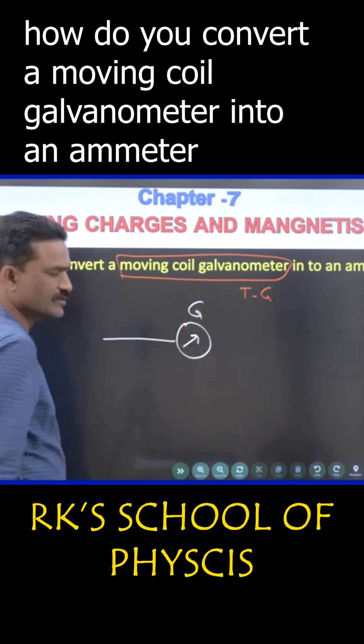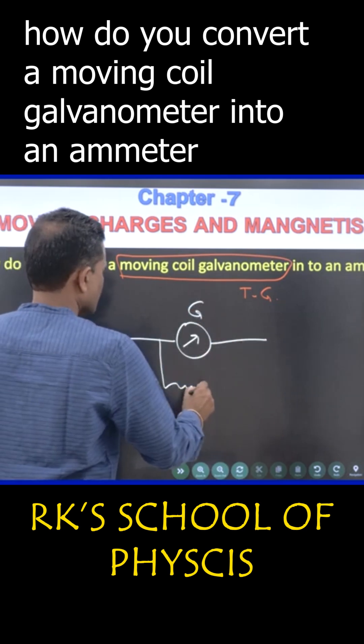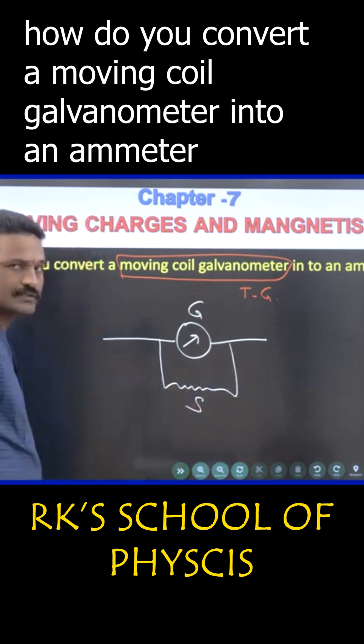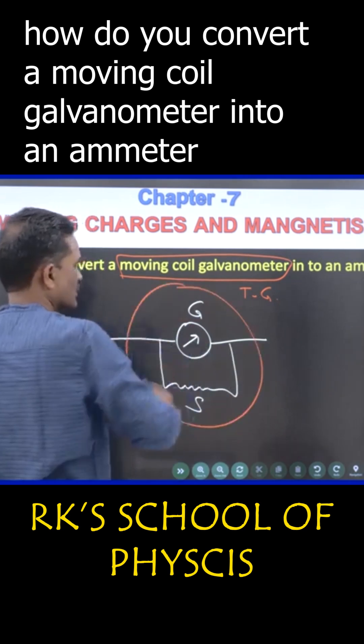This is the galvanometer. So what are you supposed to do? Connect a small resistance. What is it called? Then this is equal to an ammeter.